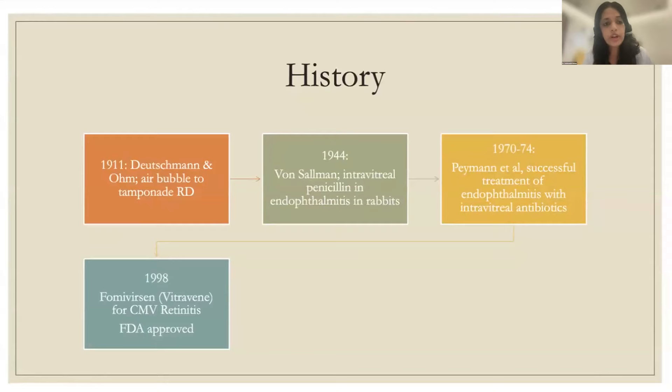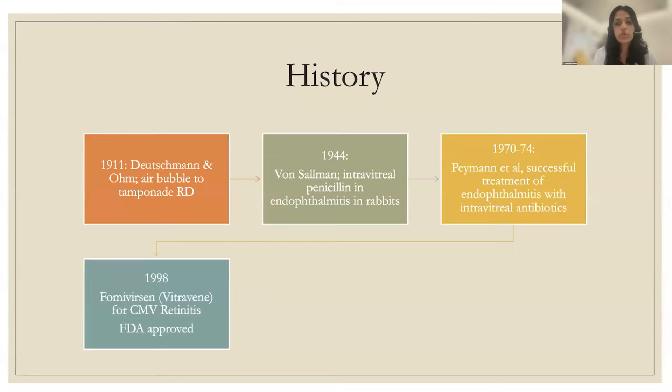The first intravitreal injection was done by Ohm et al., where an air bubble was placed inside the eye to tamponade a retinal detachment. Later, intravitreal penicillin was tried in endophthalmitis in rabbits by Salman et al. Piment et al. had multiple case reports of successful treatment of endophthalmitis with intravitreal antibiotics from 1970 to 1974. The first FDA-approved intravitreal injection was Vitravene for CMV retinitis, and now we have many intravitreal agents.